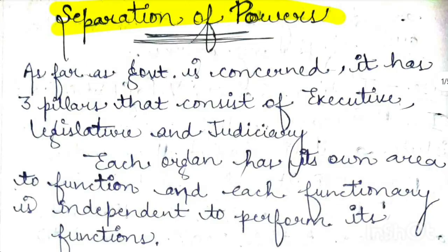In our system, there are 3 pillars — Executive, Legislature, and Judiciary. They run and govern the whole country. Every organ has its own defined functions and roles as per constitutional provisions. The Legislature's prime function is to make laws and policies; the Executive is to implement those laws and policies; and the Judiciary is to interpret those laws and policies and adjudicate matters.